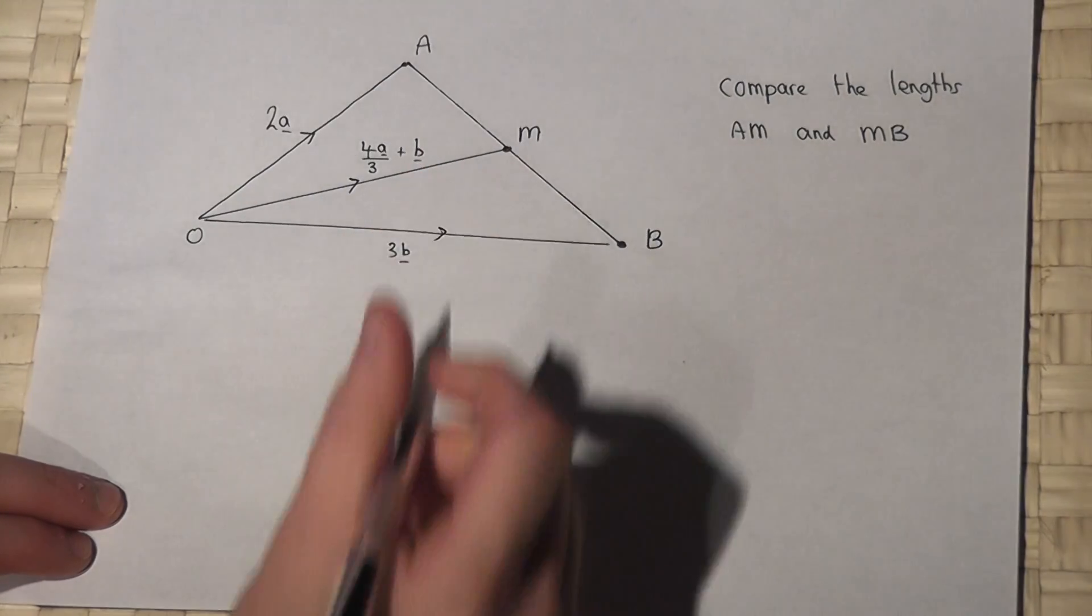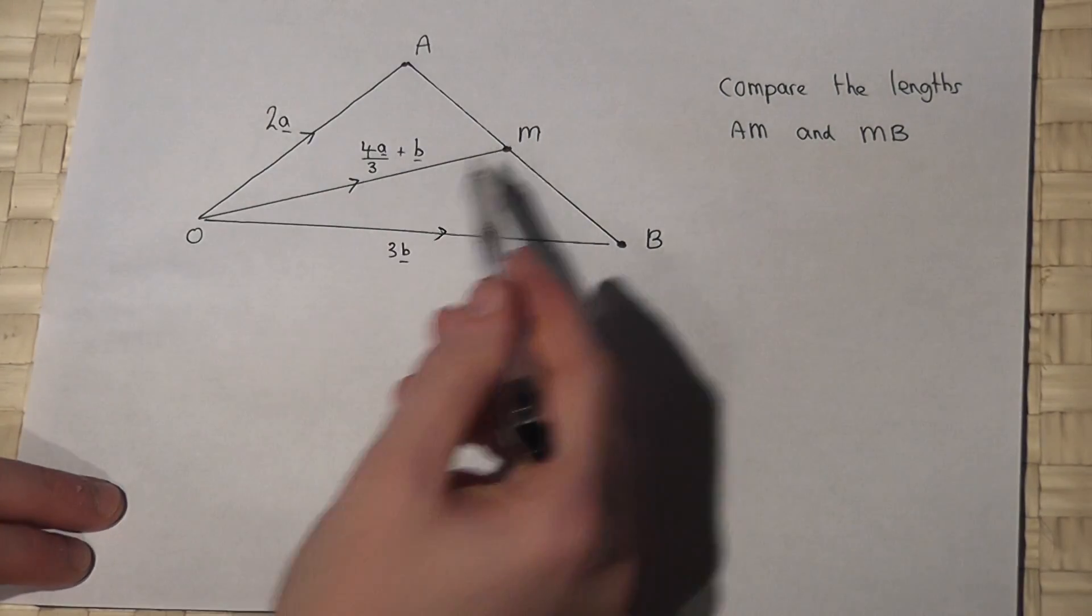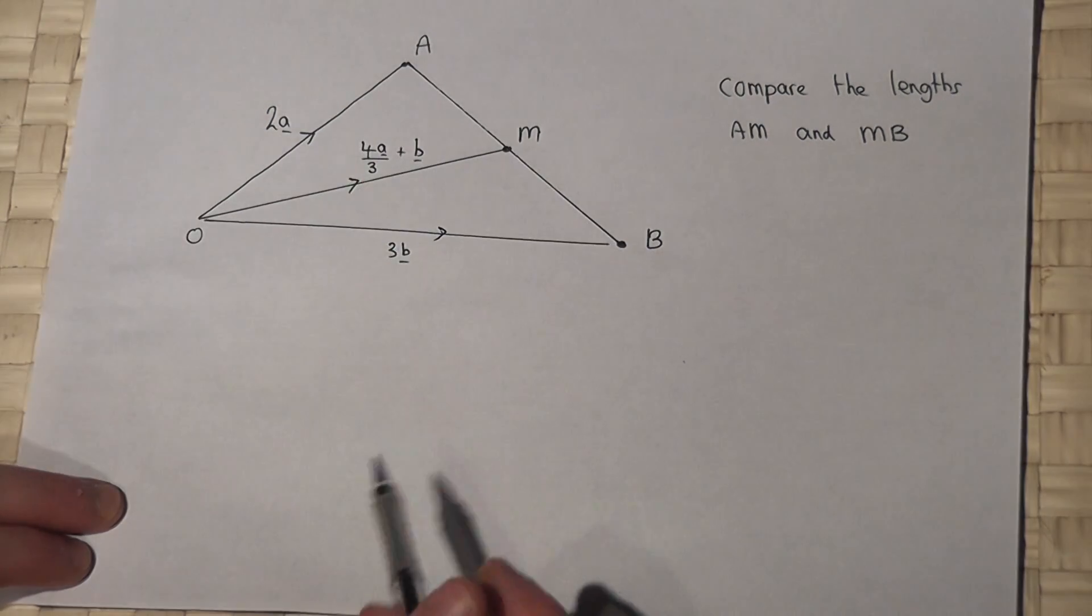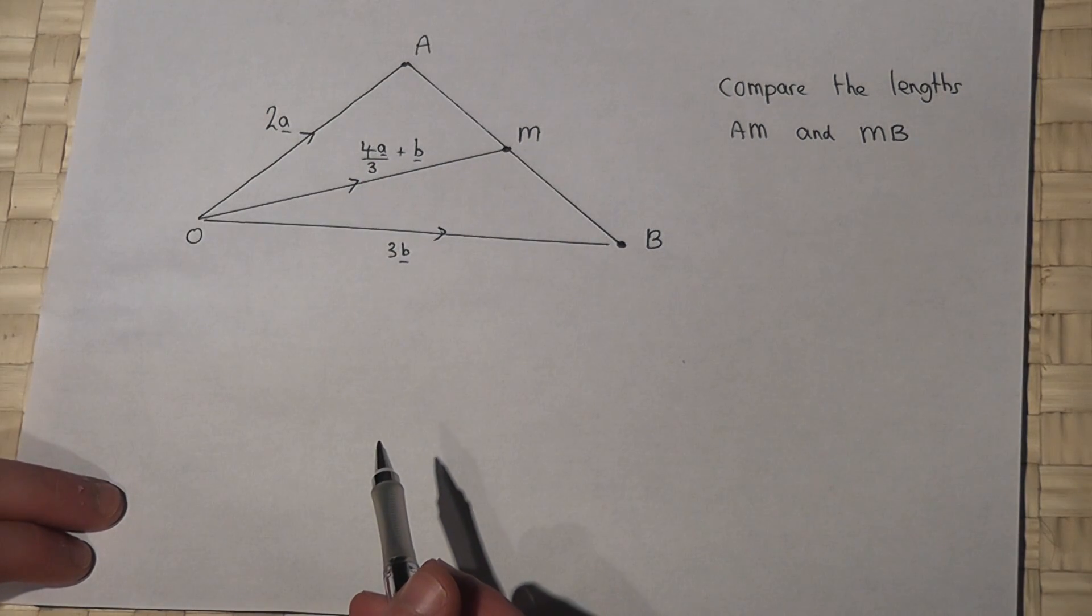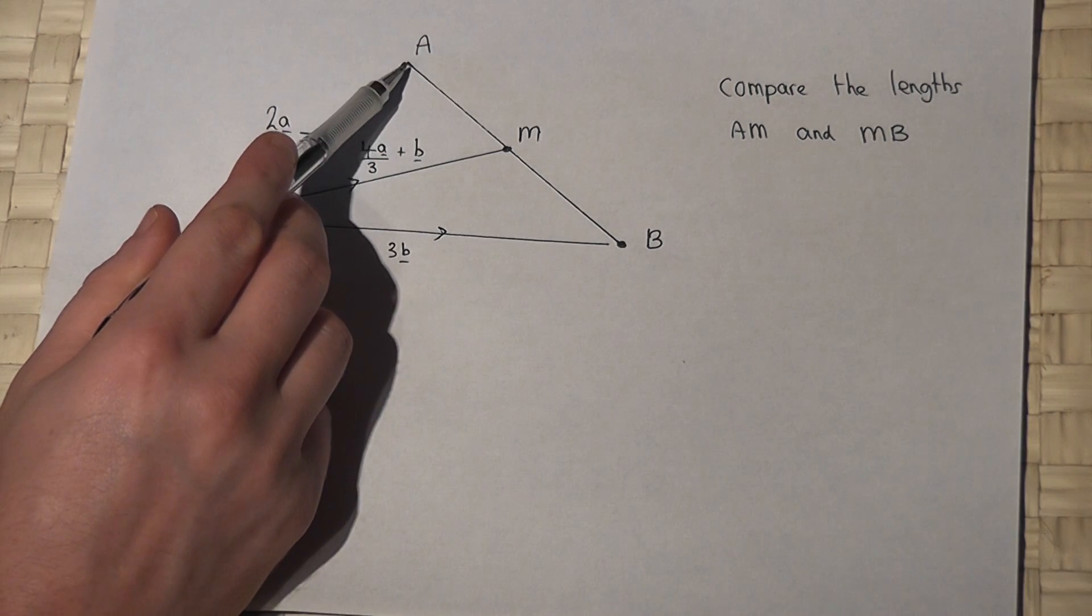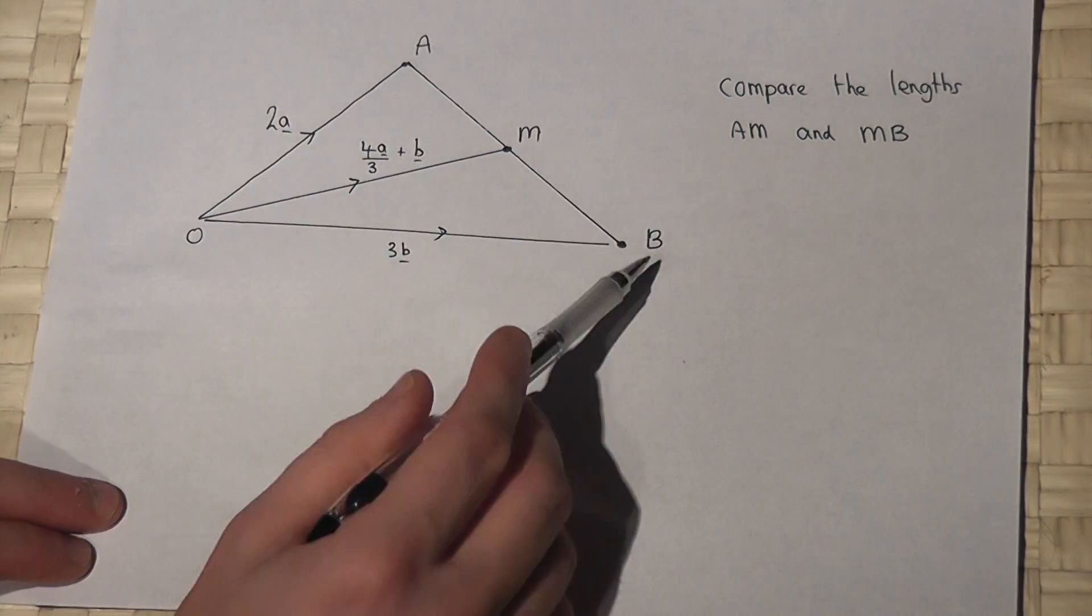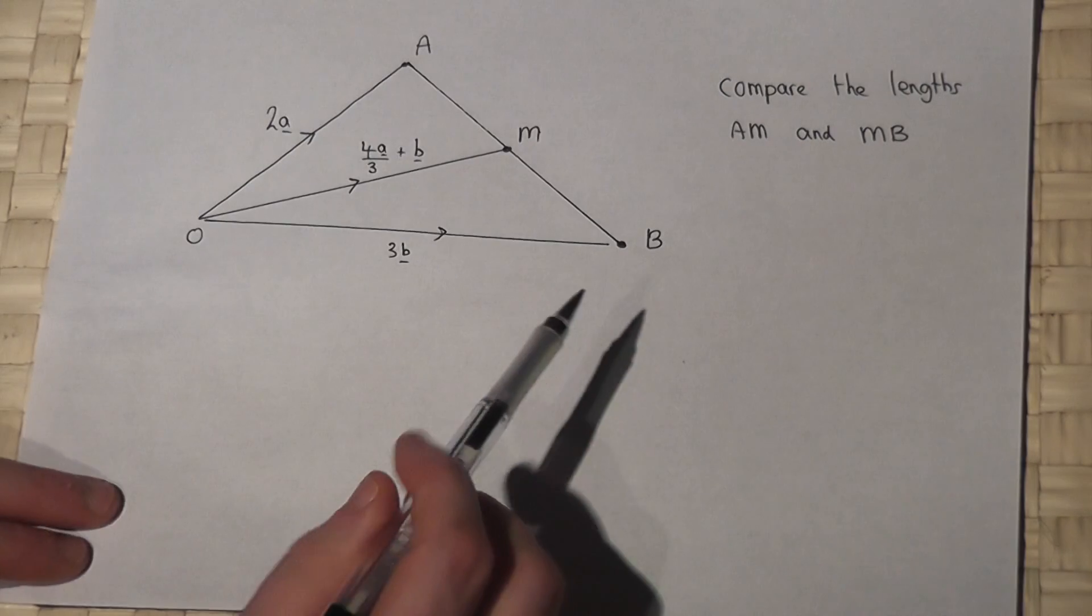In this video we're given some vectors in terms of a's and b's and we're asked to compare the length of A to M with M to B. This is not drawn accurately.